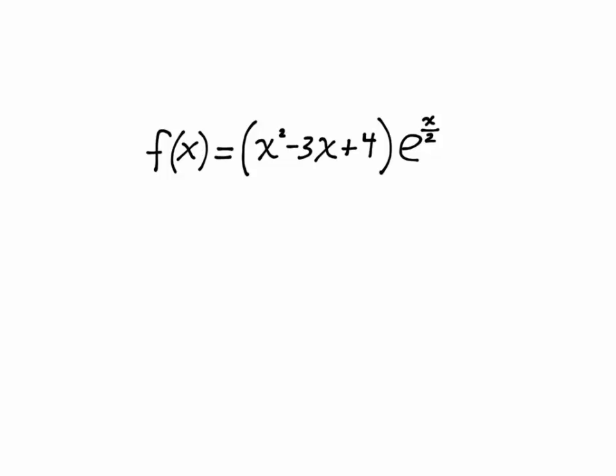The problem is to take a function like f of x equals x squared minus 3x plus 4 times e to the x over 2, and find its first and second derivative in order to determine,